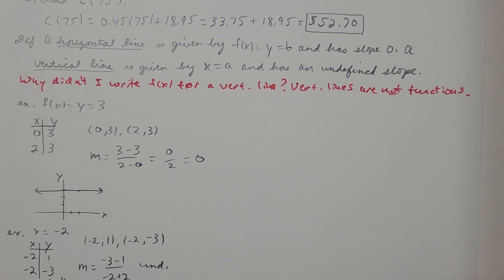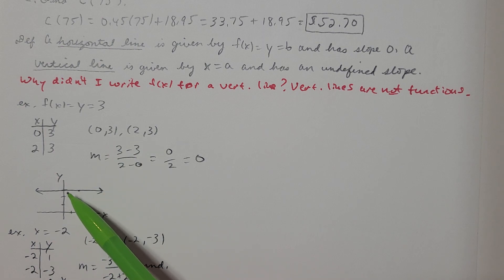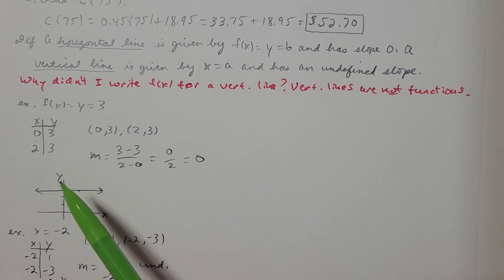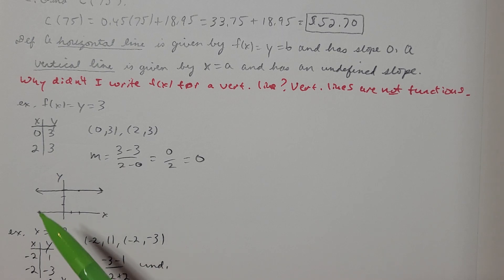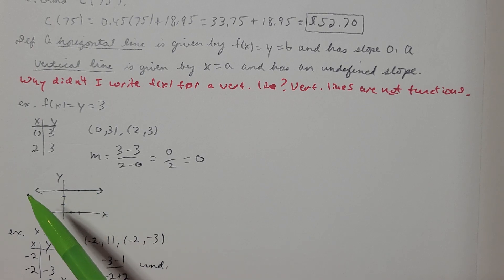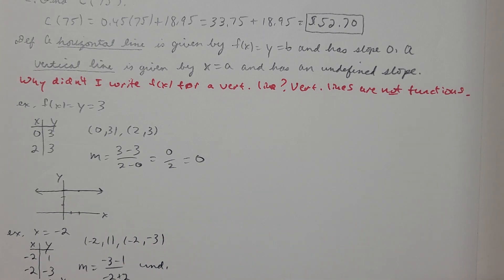Drawing the line: plotting (0, 3) and (2, 3), no matter what x is, y is always 3. I'll always come up 3 units and plot a point, so all those points at height 3 create the horizontal line y equals 3.